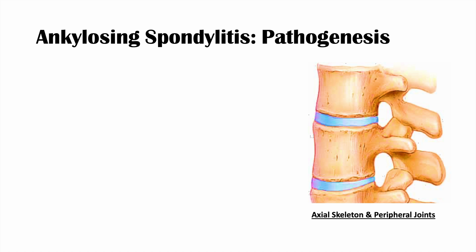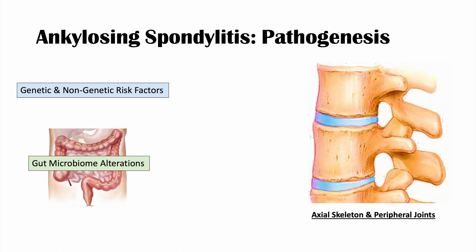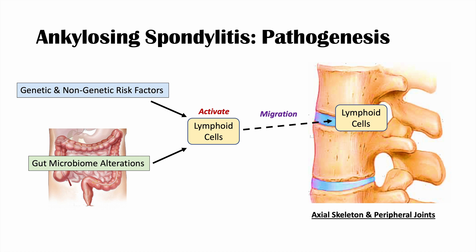The pathogenesis involves genetic and non-genetic risk factors that combine with gut microbiome alterations. These lead to the activation of innate lymphoid cells, which migrate to the axial skeleton and sometimes peripheral joints. These lymphoid cells produce interleukin-17 and interleukin-22 — cytokines that cause joint inflammation. The interleukins along with tumor necrosis factor alpha (TNF-alpha) are connected and contribute to inflammation in the joint.